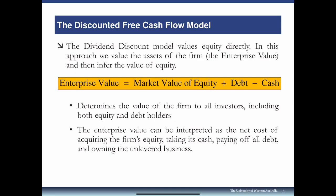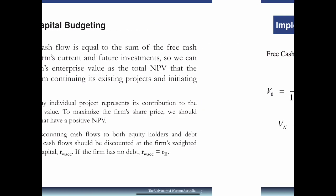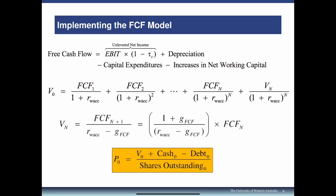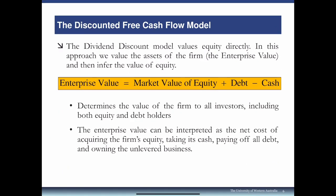If you think of Apple as a bunch of projects summed to give enterprise value, it's straightforward to work out share price by rearranging the formula. Price equals enterprise value plus cash minus debt, divided by shares outstanding. So market value of equity equals enterprise value plus cash minus debt, scaled by number of shares outstanding.